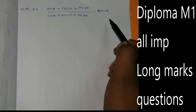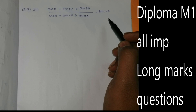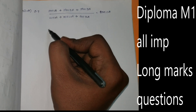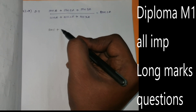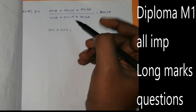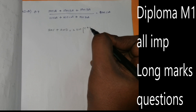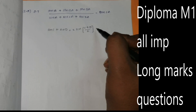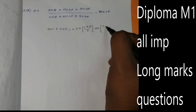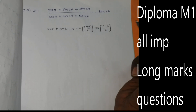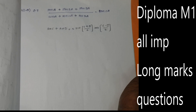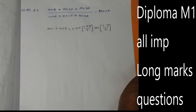I will prove that in this video. We will use the sum-to-product formula: sin C plus sin D equals 2 sin((C+D)/2) cos((C-D)/2). There are 4 formulas: sin C plus sin D, sin C minus sin D, cos C plus cos D, and cos C minus cos D.